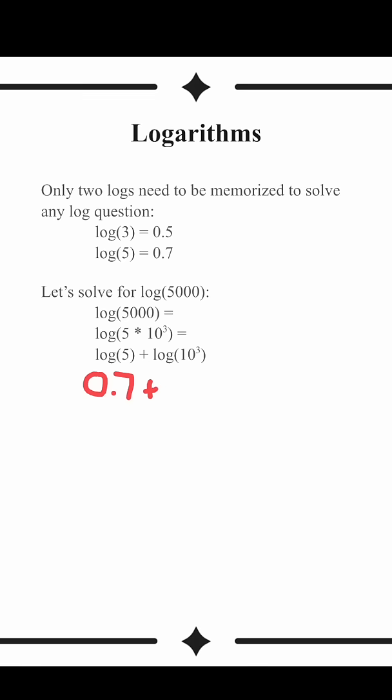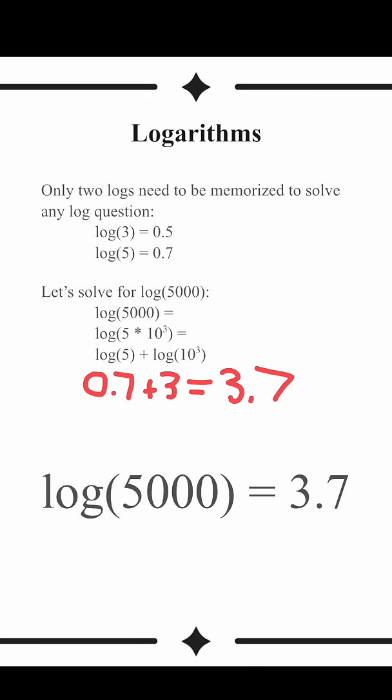Using what we know, we can see log of 5000 is simply 0.7 plus 3. Check for yourself with a calculator.